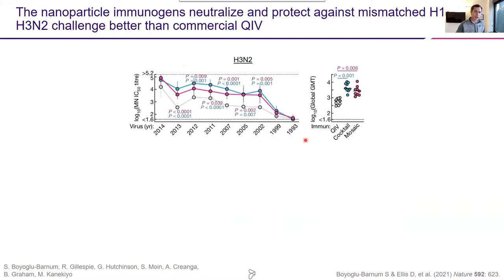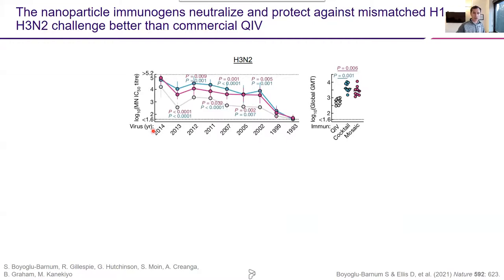However, when we look at responses against mismatched vaccines — a panel of historical H3N2 viruses going back to 1993 — both nanoparticle immunogens significantly outperformed current commercial vaccines all the way back to 2003. This experiment run back in time mimics what might happen moving forward as you continue to accumulate antigenic drift in H3N2 viruses. So we're hoping that maybe this vaccine could provide protection across multiple influenza seasons.